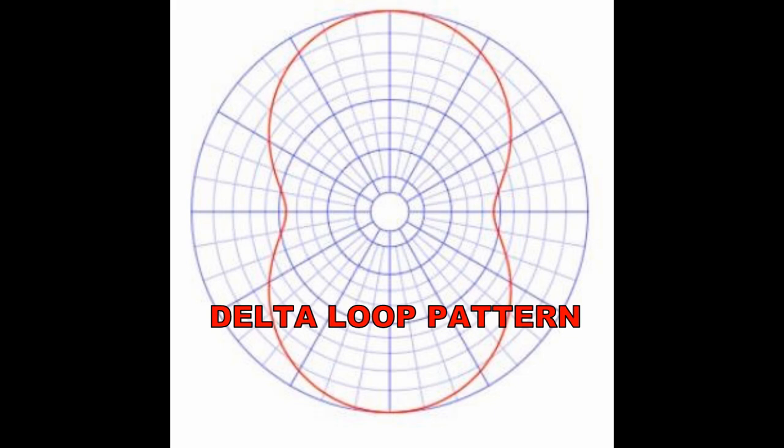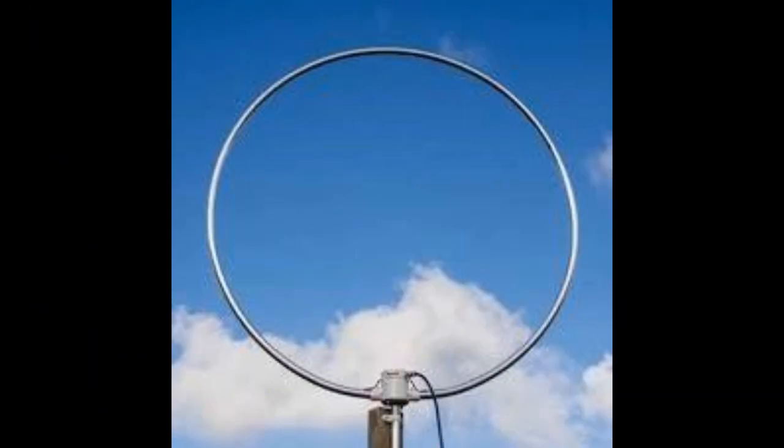But a small untuned loop or probe is not very efficient and has very low resistance. That's why they're used predominantly as receiving antennas, where losses are not so important. Even so, we may need an amplifier with our small loop.